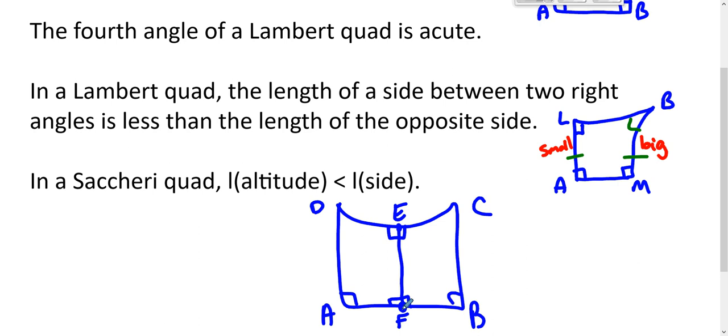Applying this twice, it must be that the length of this side is greater than the length of the altitude, and the length of this side is greater than the length of the altitude. It also follows that the length of the summit has to be bigger than the length of the base, for exactly the same reason.